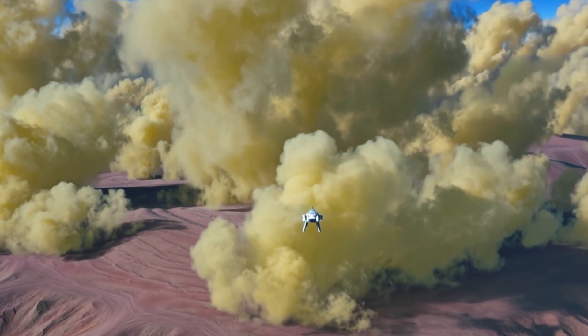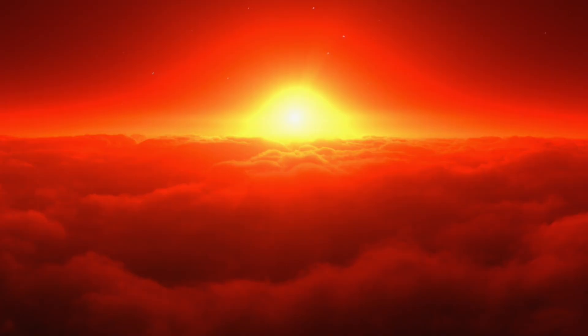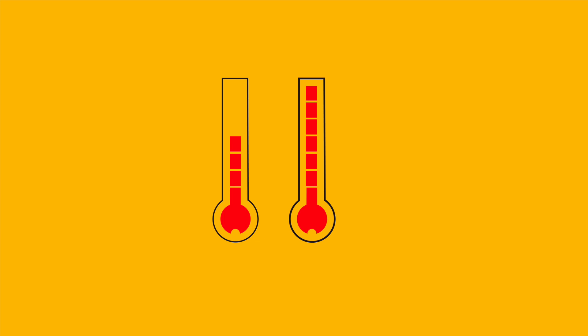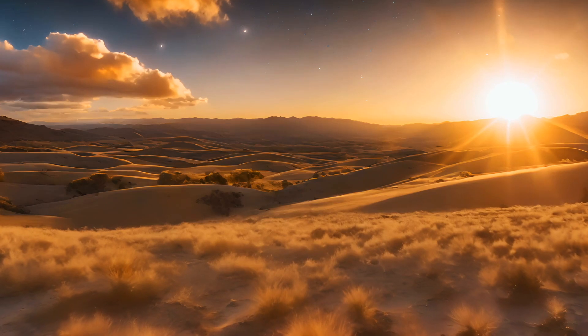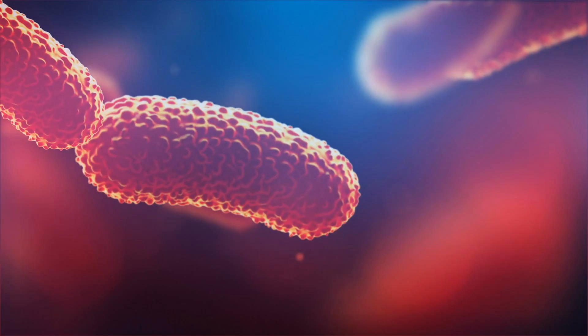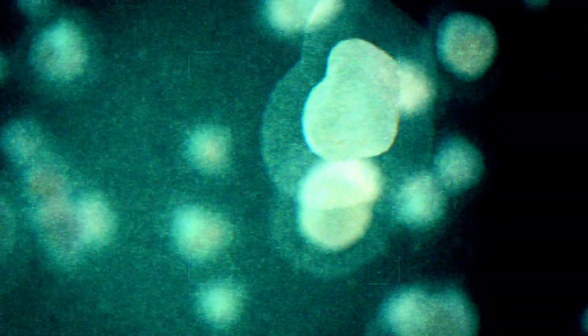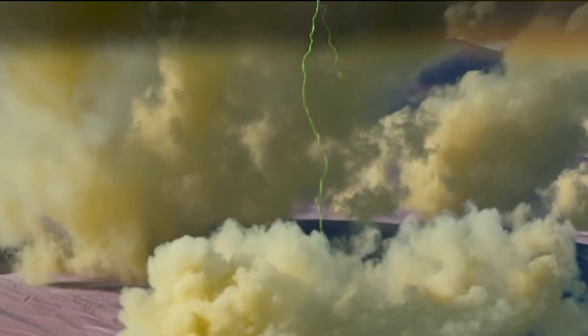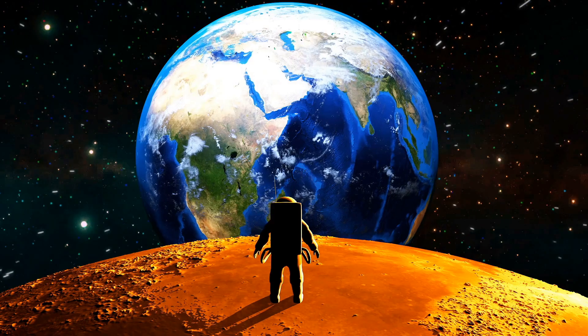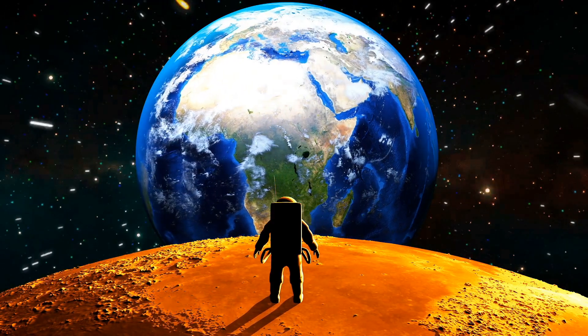But interestingly enough, at around 30 miles up from the surface of Venus, the temperatures range from about 86 to 158 degrees Fahrenheit. These temperatures could actually accommodate earthly life, such as bacteria and different types of microbes. The atmospheric pressure at this height is also drastically different than from the surface of Venus. It's more similar to the atmospheric pressure of Earth.